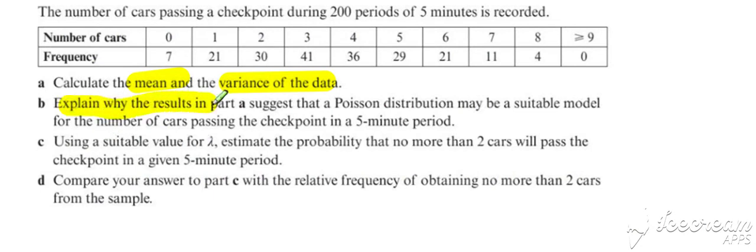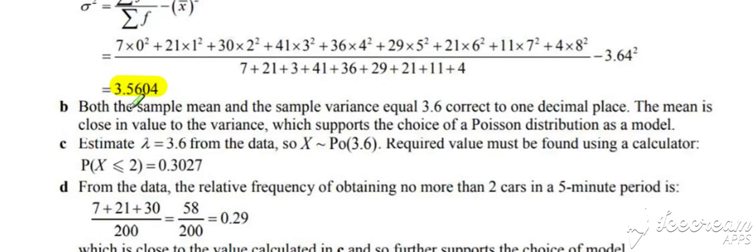Explain why these results suggest a Poisson distribution may be a suitable model. So the sample mean and the sample variance are both equal to about 3.6, correct to one decimal place. The mean is close in value to the variance, which supports the choice of a Poisson as a model. That's what we're looking at there for that kind of question.